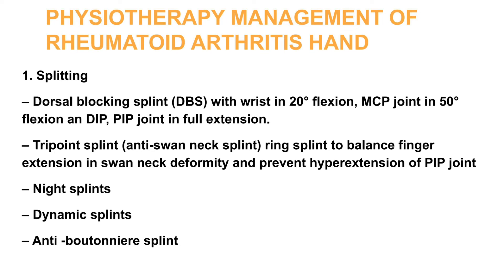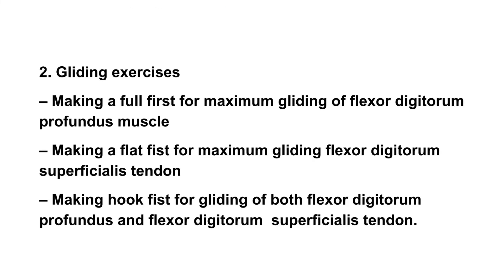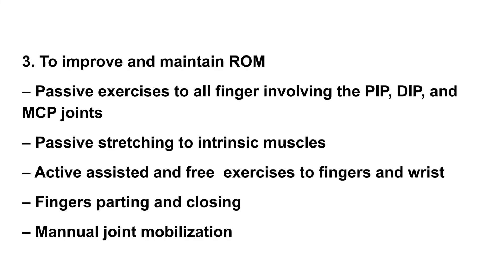Anti-spasm and pre-splint gliding exercises include: making a full fist for gliding of flexor digitorum profundus muscle, making a flat fist for maximum gliding of flexor digitorum superficialis tendon, and making a hook fist for gliding of both flexor digitorum profundus and flexor digitorum superficialis tendons to improve and maintain range of motion.